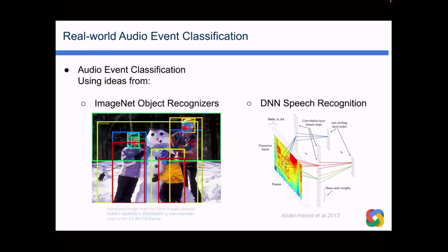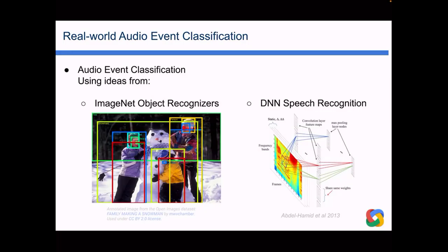When I started at Google in 2015, it was relatively early in the time of object recognition in images using deep nets, which wasn't a technology I was particularly familiar with. Deep nets were beginning to revolutionize speech recognition, which was something I had worked on a lot, but I was interested in environmental sound recognition and was using support vector machines. The results we were seeing from deep nets on images were so impressive that we needed to try them for audio events.